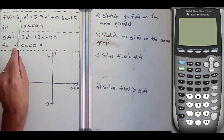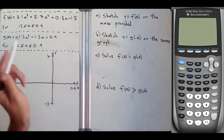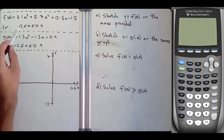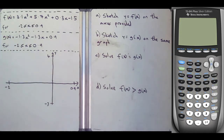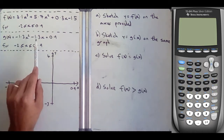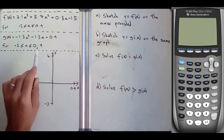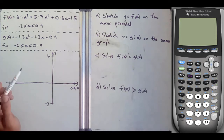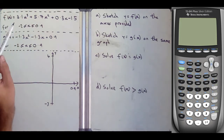f of x equals 3.1x cubed plus 5.7x squared plus 0.3x minus 1.5, for x greater than or equal to minus 2 or less than or equal to 0.9. g of x equals minus 1.3x squared minus 1.3x plus 0.9, and x is greater than or equal to minus 2 and less than or equal to 0.9. So you've got two different functions over exactly the same domain.